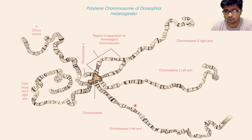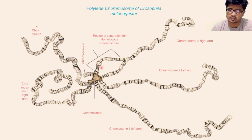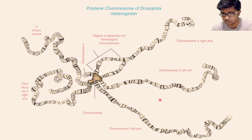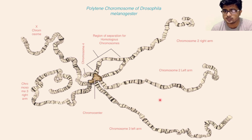To summarize: polytene chromosomes are found in the salivary glands of dipterans or fruit flies. They form banding patterns, are joined to a chromocenter, and consist of multiple strands formed by endo-reduplication. In between the thick and thin bands, there is the formation of puffs. This thick and thin banding pattern is a key characteristic of polytene chromosomes.